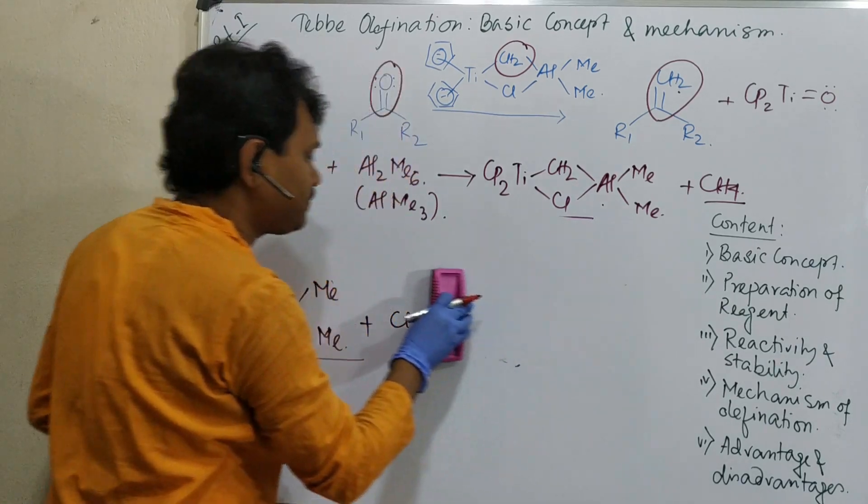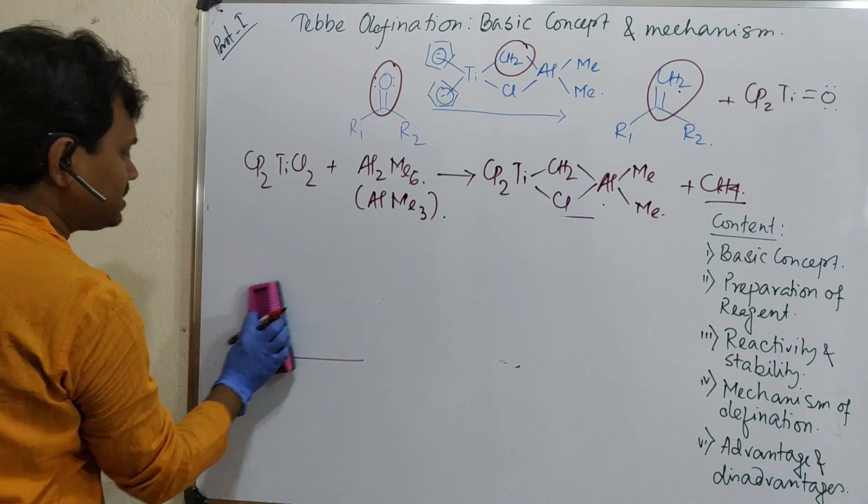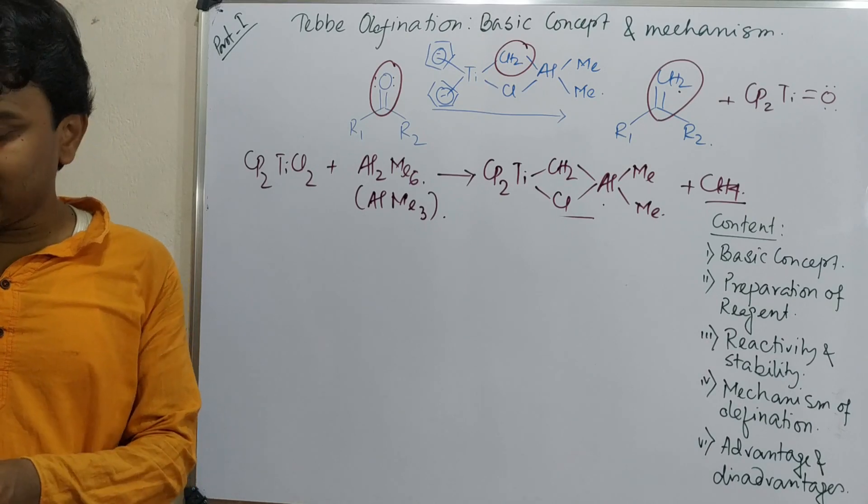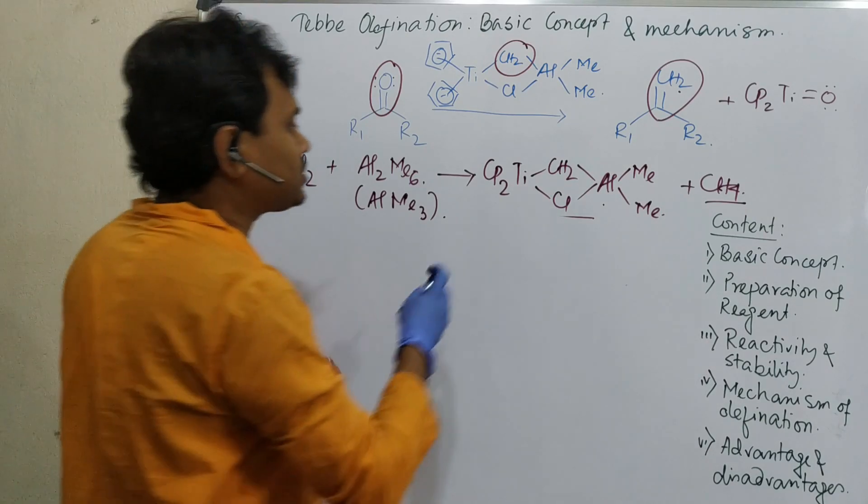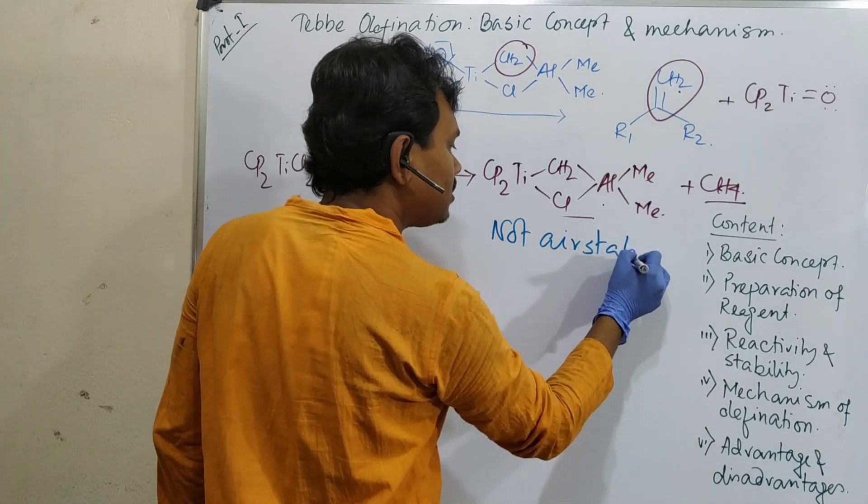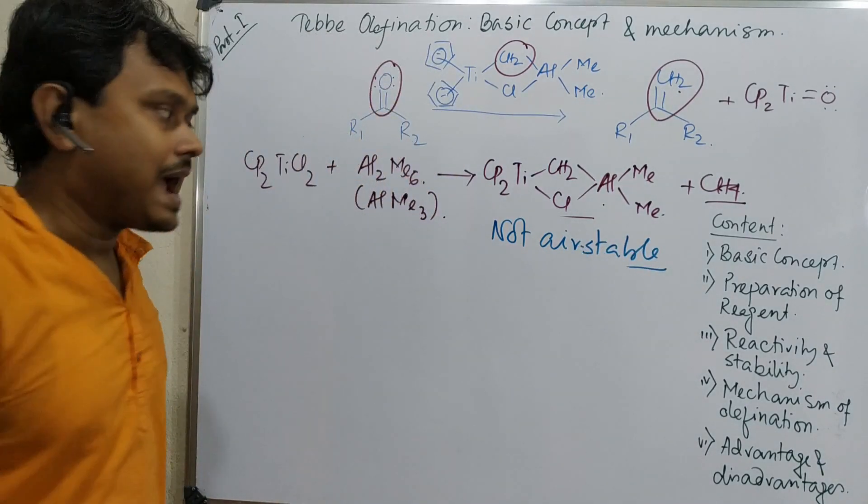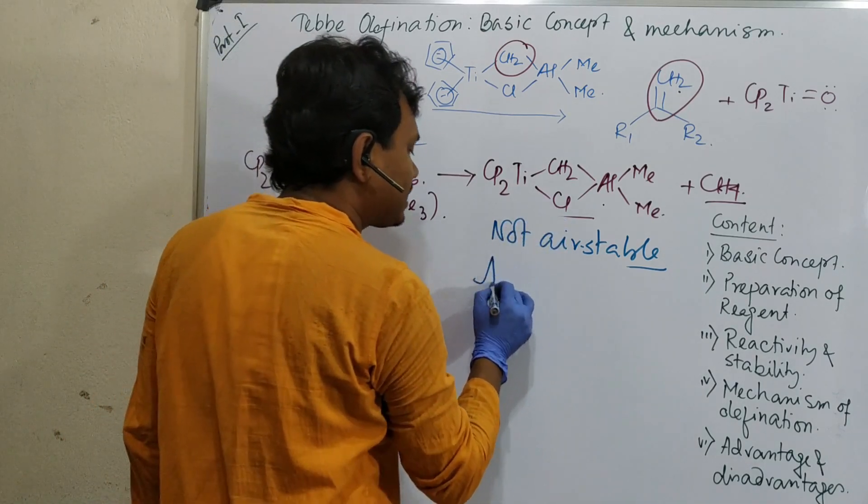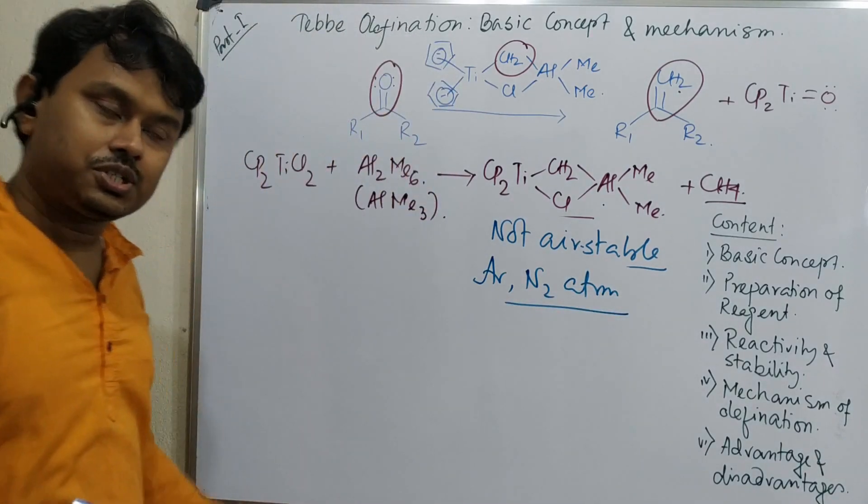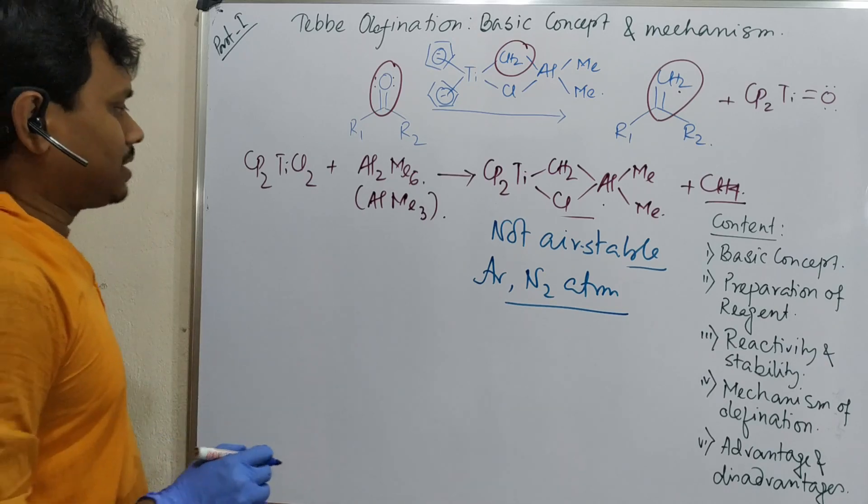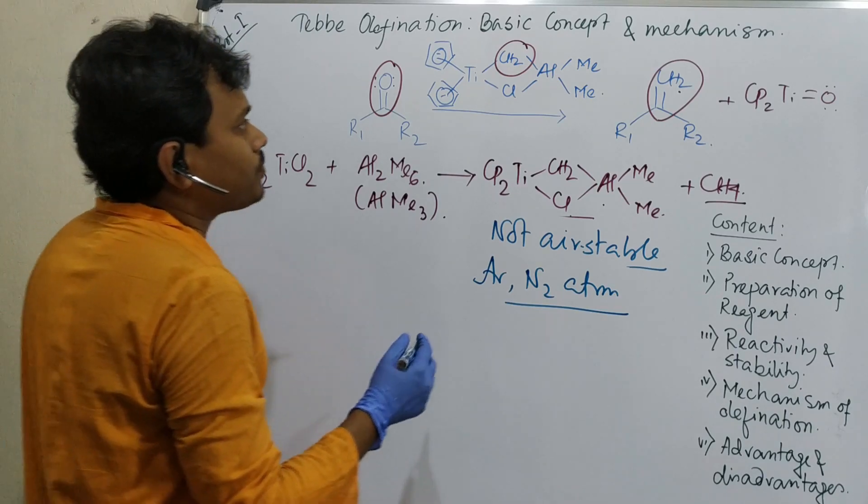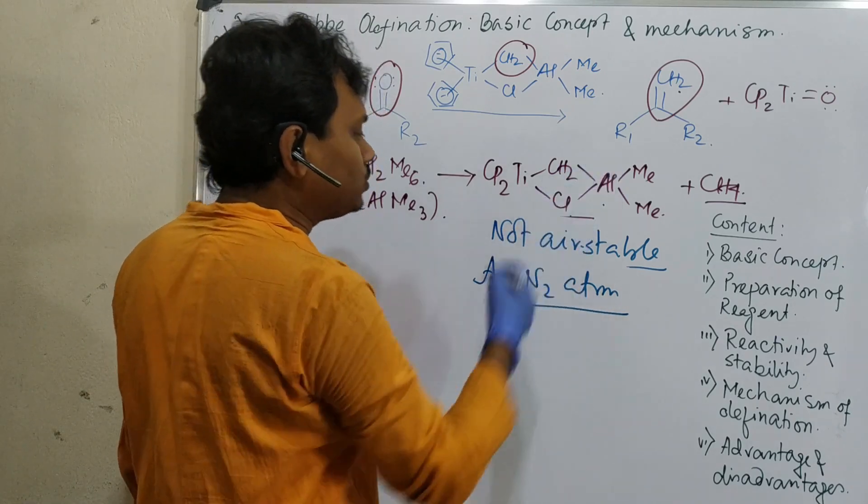Now since it is an organometallic reagent, the question comes what is its property? Or more importantly, what is its stability? Actually this reagent is not air stable. This is not air stable. So should be handled, reaction should be handled under argon or nitrogen atmosphere. Inert condition is essential for this reaction.